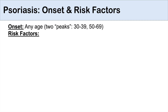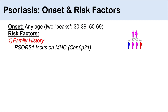There are a wide variety of risk factors and triggers for psoriasis. One of the major ones is a family history or genetic component. Several genes have been implicated, including the psoriasis susceptibility 1 locus (PSORS1) on the major histocompatibility complex gene on chromosome 6p21, HLA-Cw6 which relates more to early onset psoriasis, and specific interleukin genes like IL-12 and IL-23.